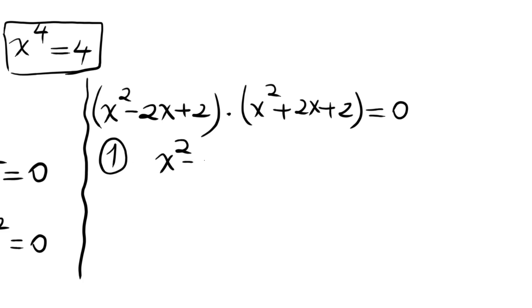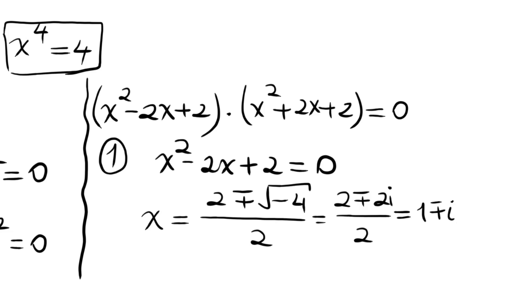The first one is x squared minus 2x plus 2 equals 0. The roots here from the quadratic formula are 2 plus or minus, this 4 minus 8 which is minus 4, divided by 2 times 1 is 2. So we have 2 plus or minus 2i divided by 2, so 1 plus or minus i are our two roots from the first part.